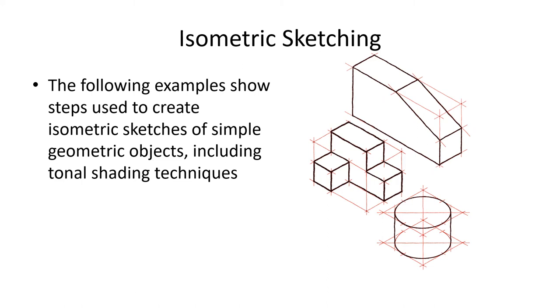So the following examples show steps used to create isometric sketches of simple geometric objects, including tonal shading techniques.